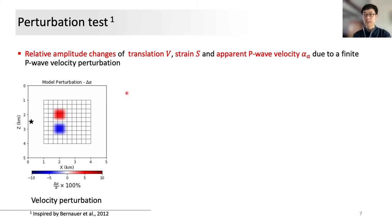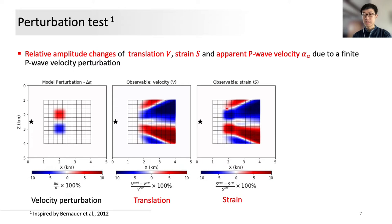In the first simulations, we compute synthetic velocity, strain, and apparent P-wave velocities for the background models. This provides reference amplitude values for each observable. We then perform another simulation under the perturbed models to calculate relative amplitude changes at each receiver.